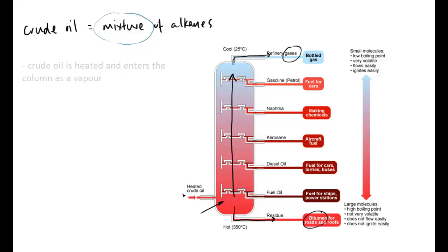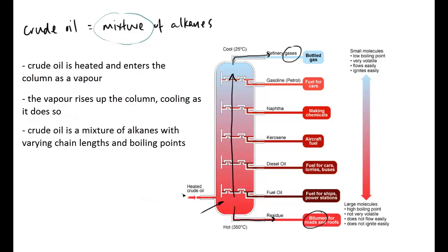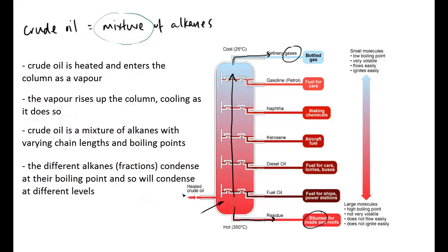Or they go out the top as gases - these have such low boiling points they don't turn back to liquids. So crude oil enters as vapour, rises up the column and cools. Because crude oil is made of a mixture of alkanes of varying chain lengths, each has a different boiling point. As it rises and cools, different alkanes condense at their boiling points and can be pumped off. It's because there's a range of boiling points that allows separation.